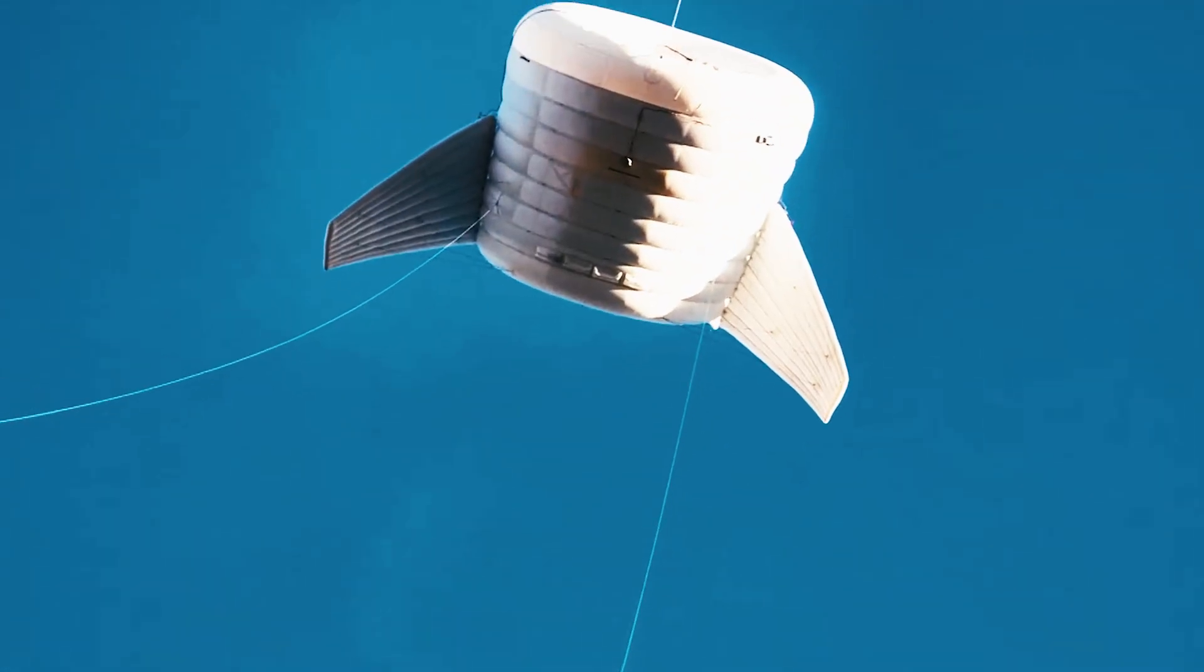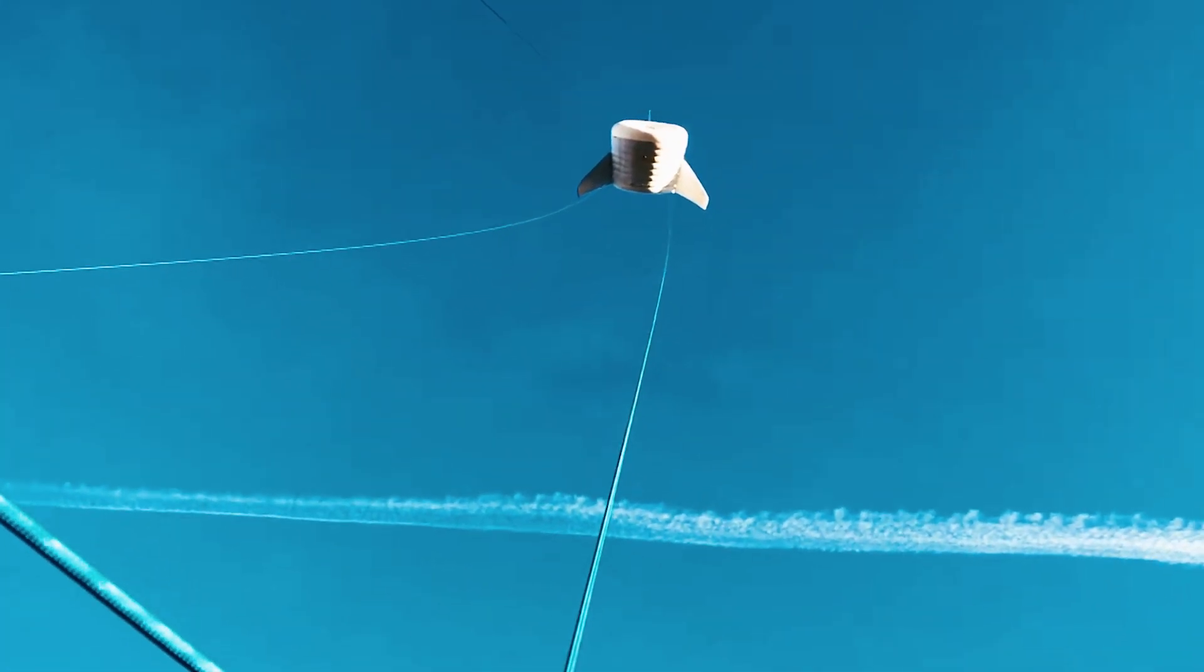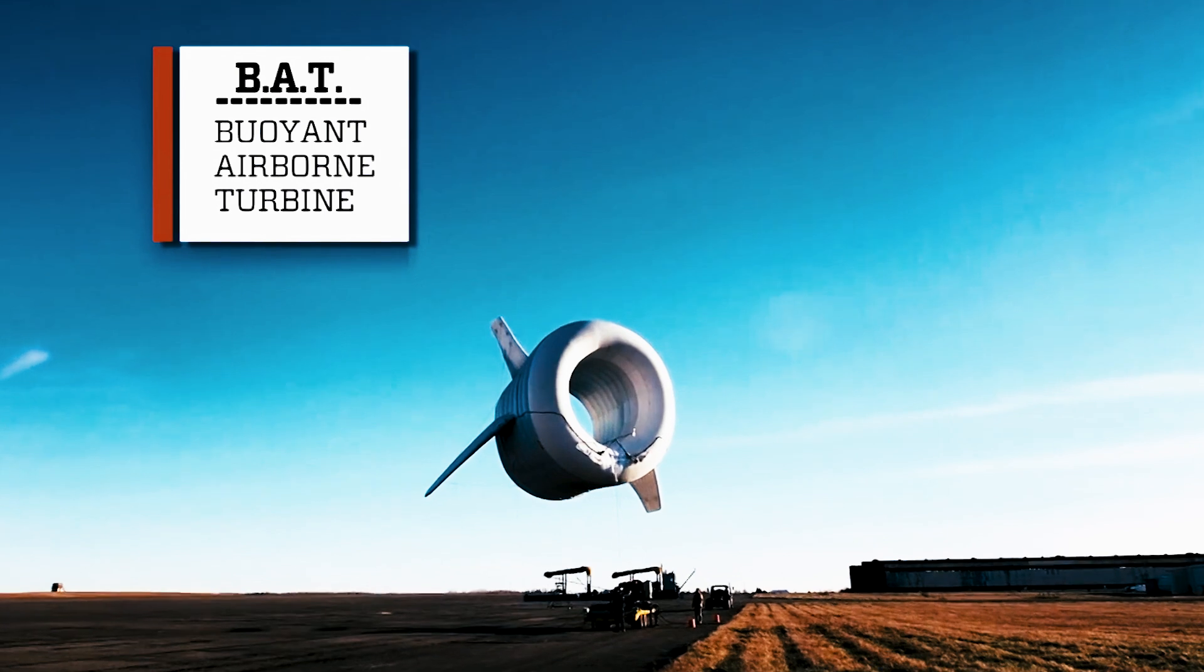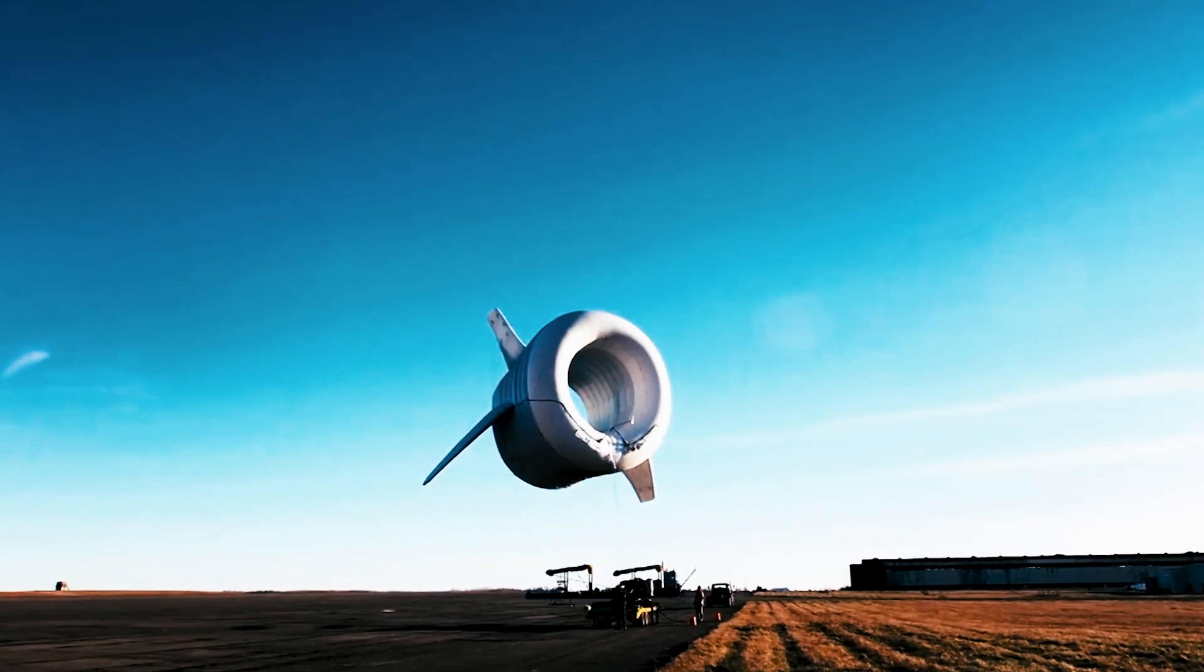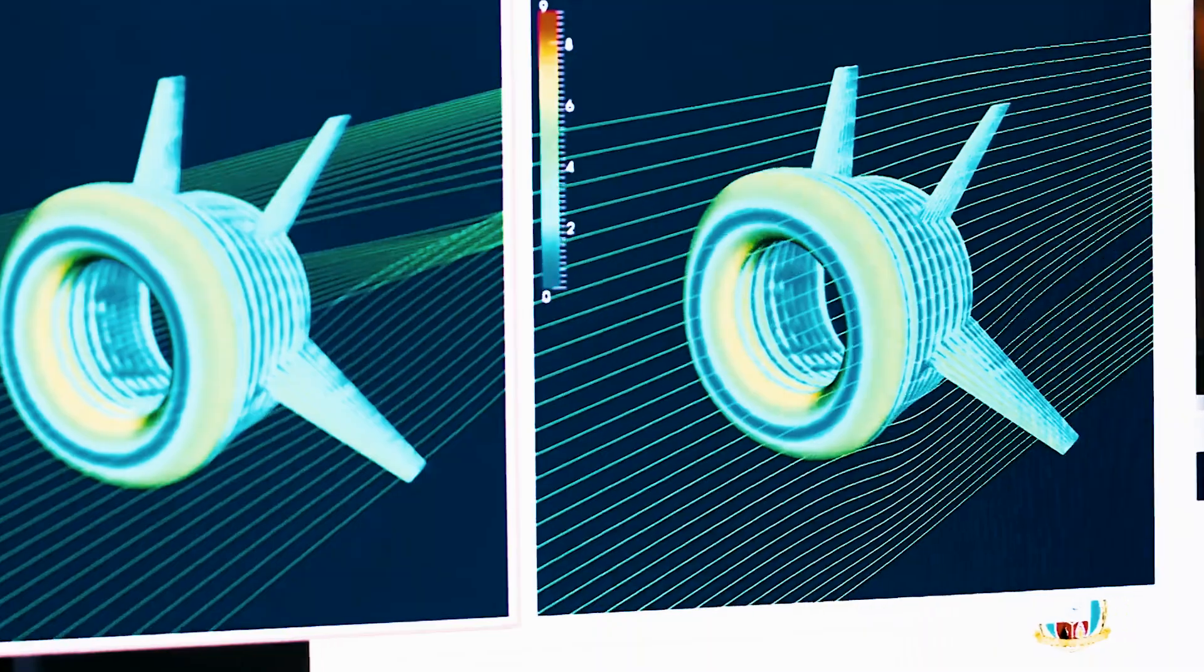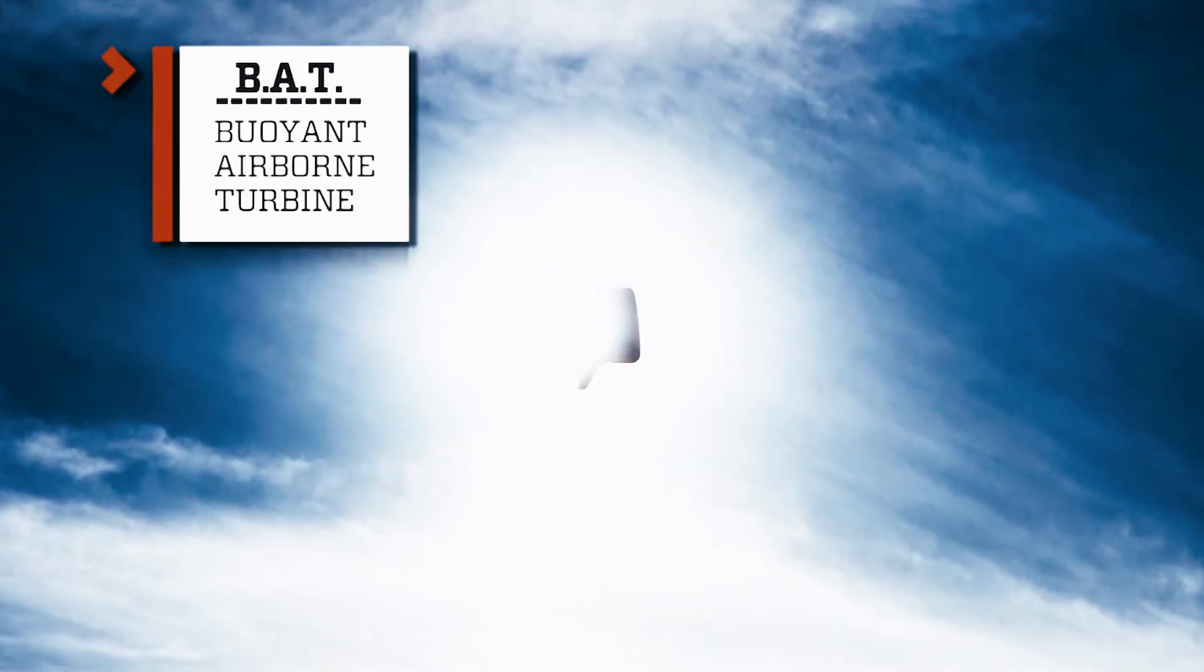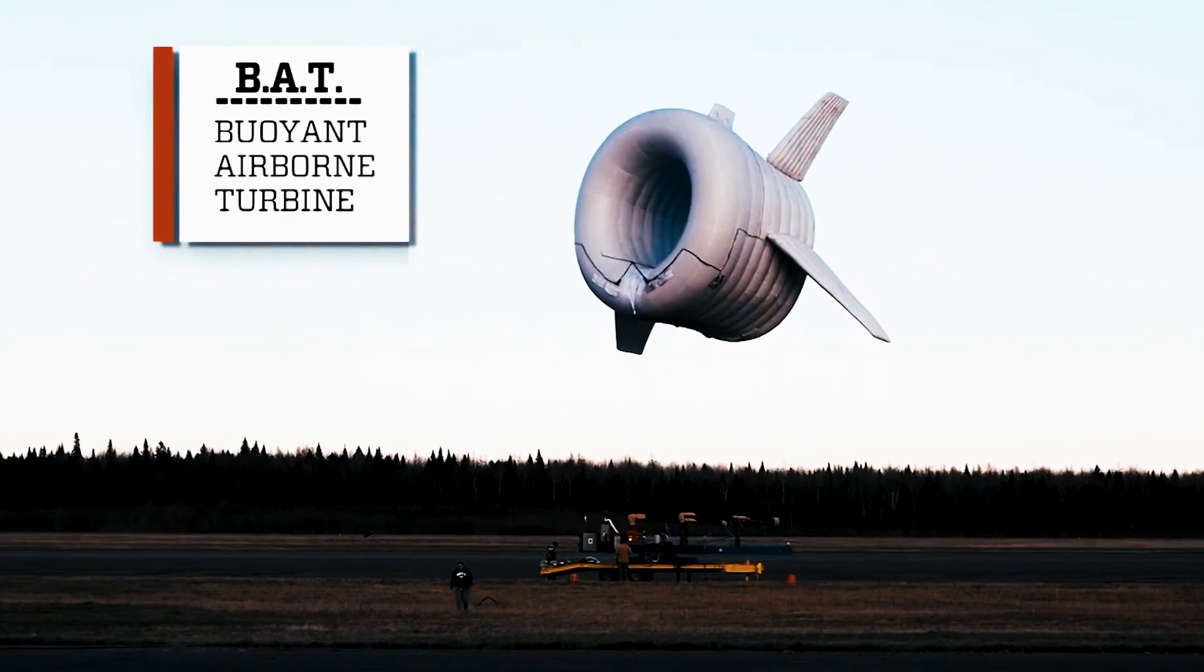The BAT's shell, crafted from durable fabric, is filled with helium and features patented design elements that allow it to adapt to changing wind conditions while directing airflow toward the turbine. This aerodynamic buoyant structure not only sustains the BAT in various wind intensities, but also serves as a platform for attaching additional equipment for remote services.